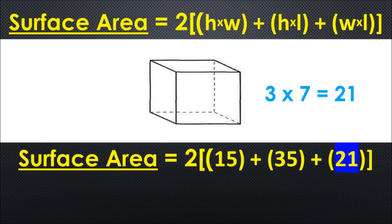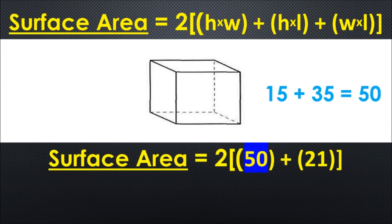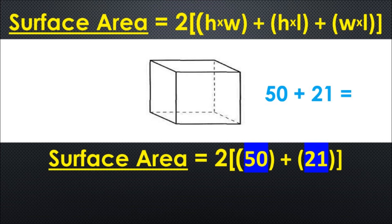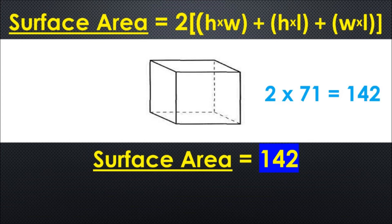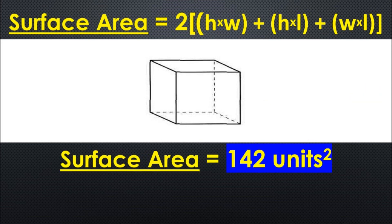Almost there. Now we add 15 plus 35, which is 50. 50 plus 21 is 71. Last, we multiply 71 by 2. So the surface area is 142 units squared.